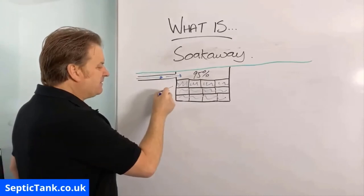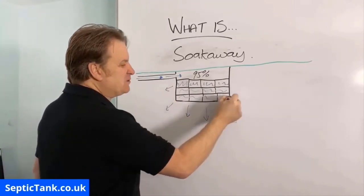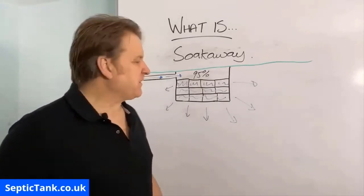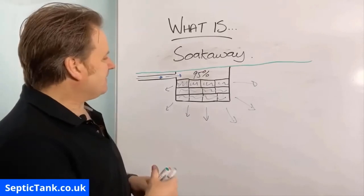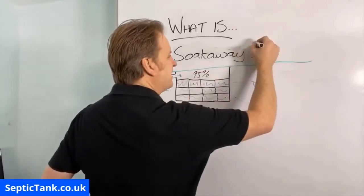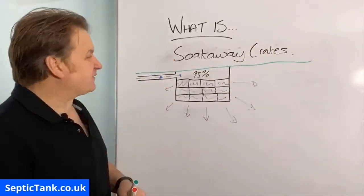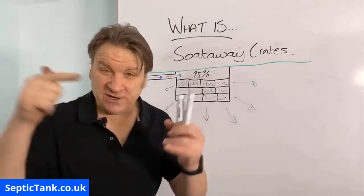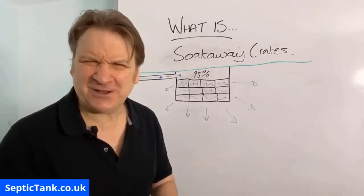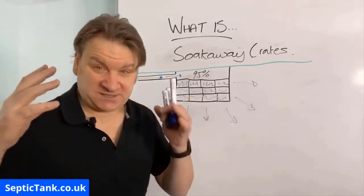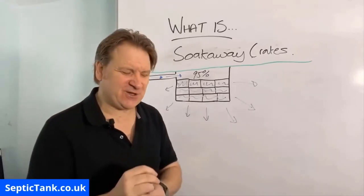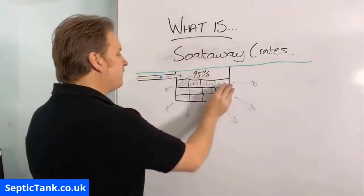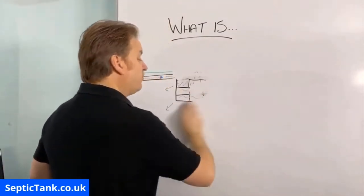Soak away crates are the latest technology, designed during the space age — they take about 40 minutes to an hour to put in. So those are basically the different types of sewage systems: a cesspool — sealed unit; a septic tank — inlet and outlet; a sewage treatment plant — turns sewage into clean water; soak away pits, soak away pipes, herringbone systems, and soak away crates. That's the whole spectrum of off-mains sewage systems.